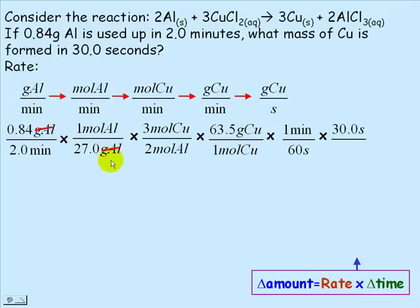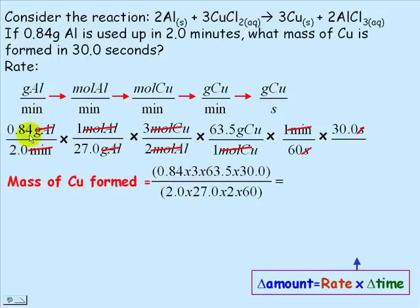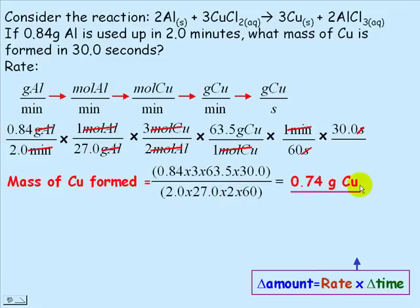Cancelling units: grams of aluminum, moles of aluminum, moles of copper, minutes, and seconds all cancel, leaving grams of copper. We calculate: 0.84 × 3 × 63.5 × 30.0 on top, divided by (2.0 × 27 × 2 × 60) on the bottom. Working this out on a calculator gives 0.74 grams of copper.